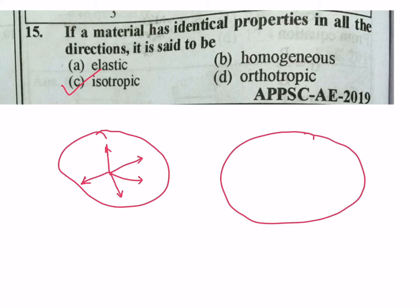For a homogeneous material, properties are continuous and the same at any point. For an orthotropic material, properties are different in three mutually perpendicular directions. Wood is a very important example of an orthotropic material — different properties in three mutually perpendicular directions.